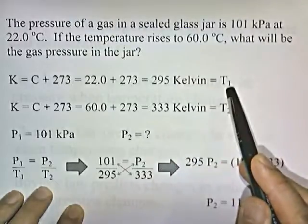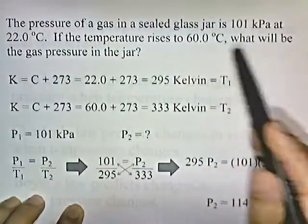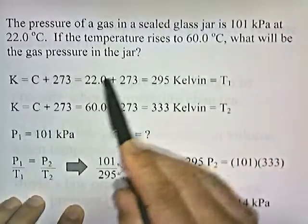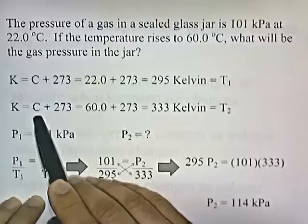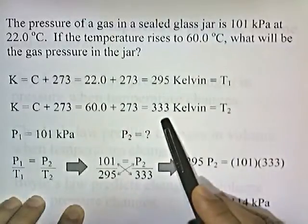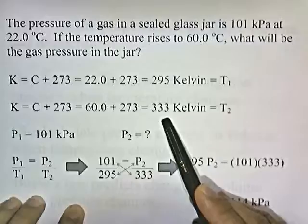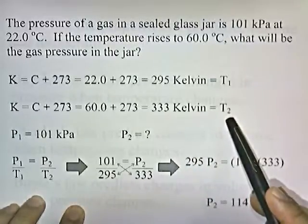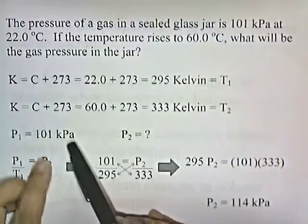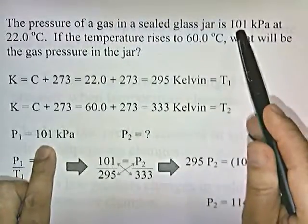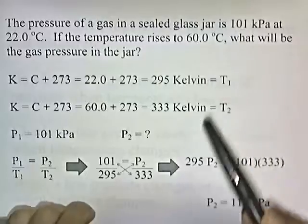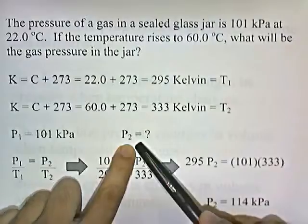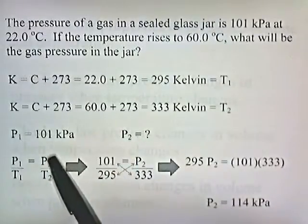The gas is heated to 60 degrees Celsius, so 60 plus 273 gives us 333 Kelvin — that is the new or final temperature. The initial pressure is 101 kilopascals. What we want to know is what the new pressure will be after we heat the gas. If we heat the gas, we expect the pressure to be higher.